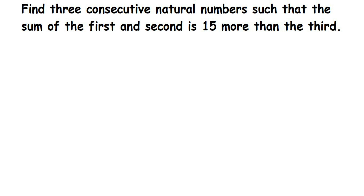Here is a question from linear equations in one variable for Class 7. The question is: find three consecutive natural numbers such that the sum of the first and second is 15 more than the third. They have not given any number — they have just given the relationship between the numbers. They're talking about three consecutive natural numbers.